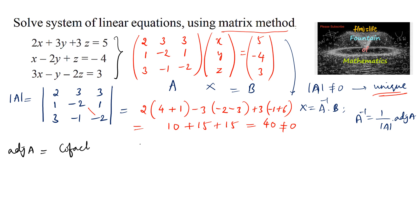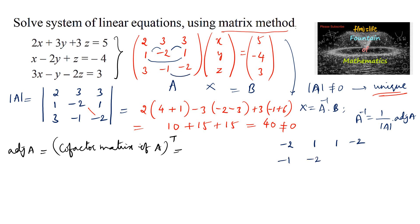The adjoint of A is the transpose of the cofactor matrix. Using a shortcut method, we set up the cofactor matrix by considering the relevant submatrices for each element position across all three rows and columns.